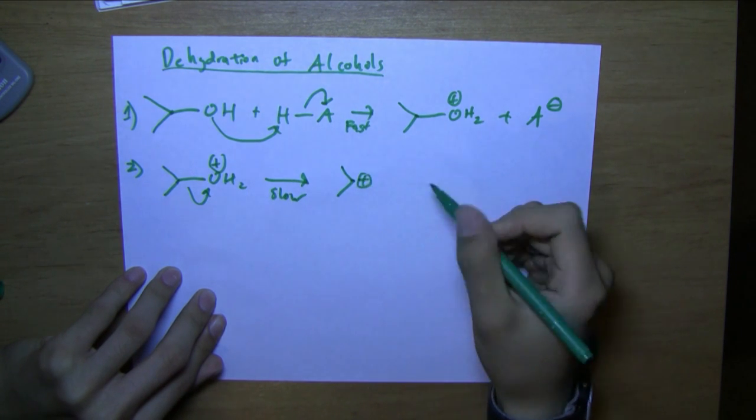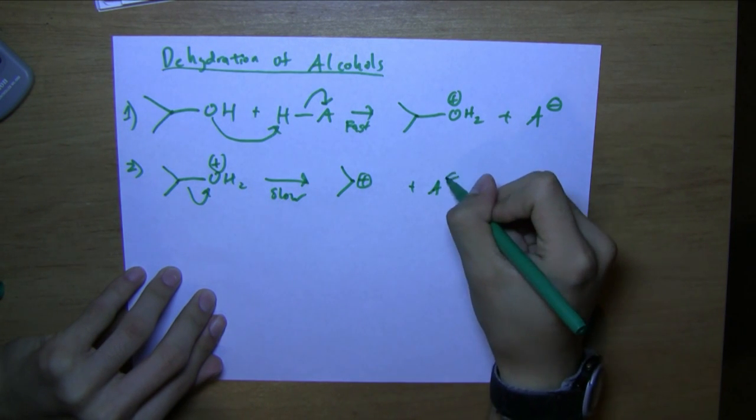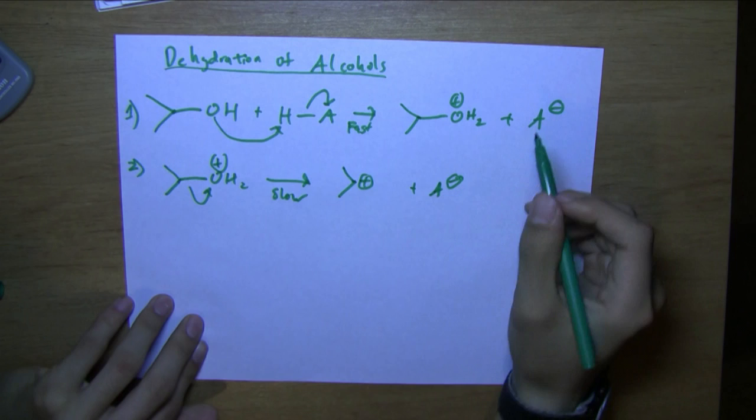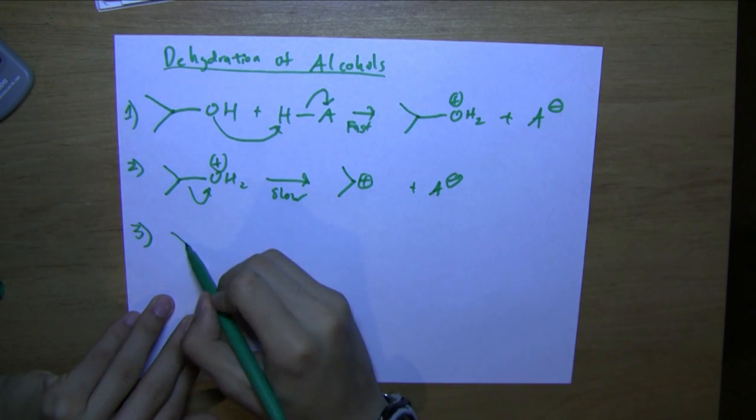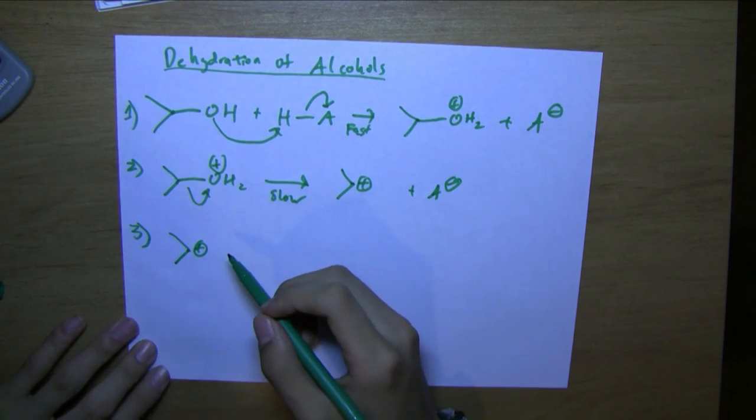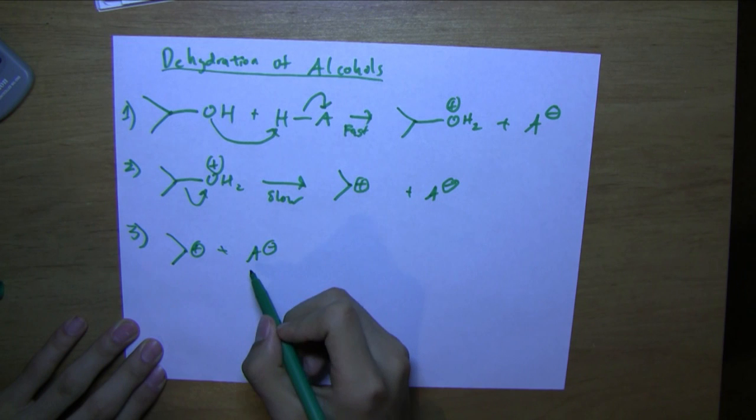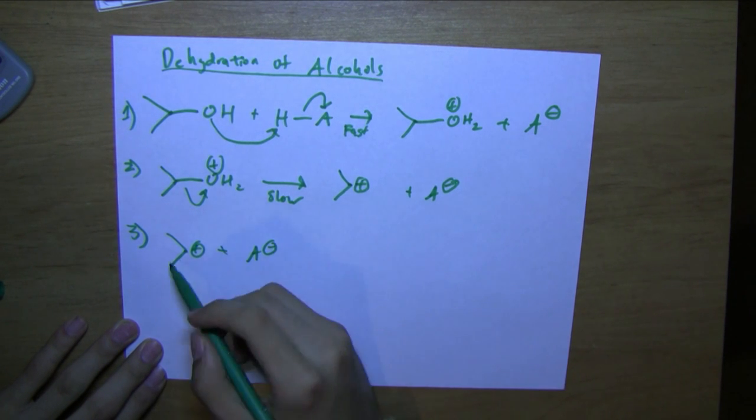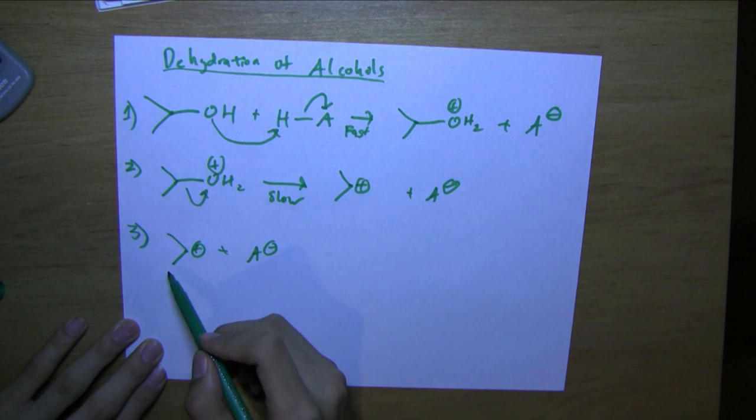Now we have the secondary carbocation here and the conjugate base of the acid from before. Now the third step, this conjugate base would basically just come and deprotonate a beta hydrogen. So this is the alpha carbon, this would be a beta carbon.